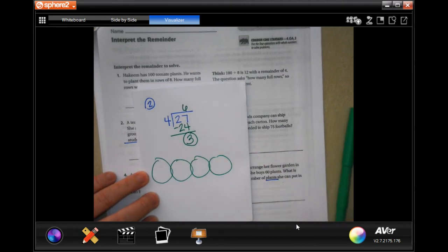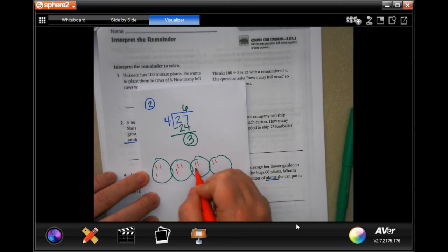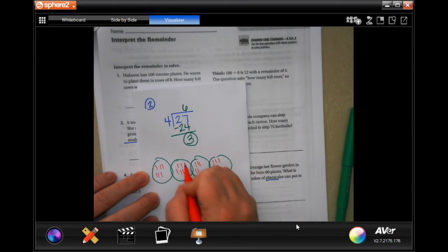You need to split up 27. [Counting 1 through 27 into groups of 4, resulting in 6 full groups and 3 remaining]. That means 1, 2, 3, 4, 5, 6, which is the number we got, with 3 left over, which is the number we got. Three of those students are without a group.